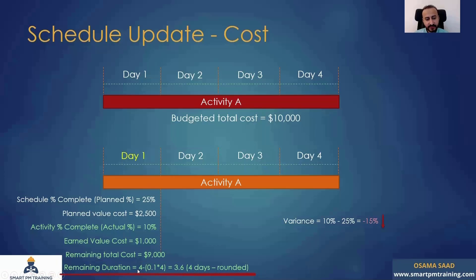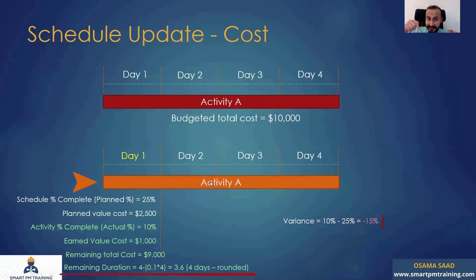The remaining duration is 4 minus 0.1 times 4 — which is 10% times the original duration of 4 days. So the remaining duration is 3.6 days. In Primavera, if you have 10% for this activity, you'll end up with 3.6 remaining duration. But Primavera does not show decimals — it will round to the nearest integer, so we get 4 days.